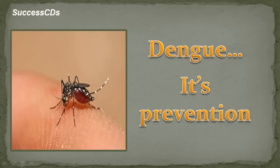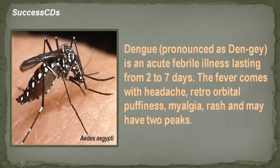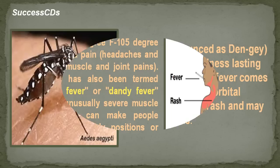Dengue fever is a disease caused by a family of viruses that are transmitted by mosquitos. Dengue is an acute febrile illness lasting from 2 to 7 days. The fever comes with headache, retroorbital puffiness, myalgia, rash and may have two peaks.